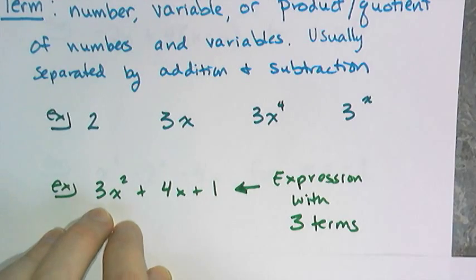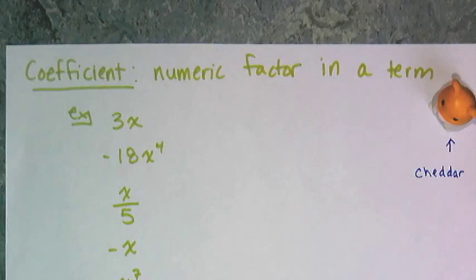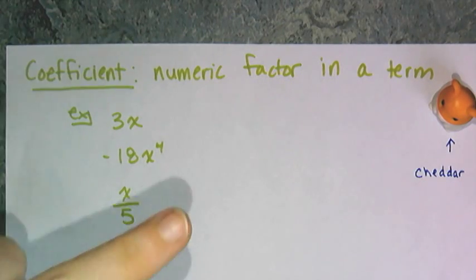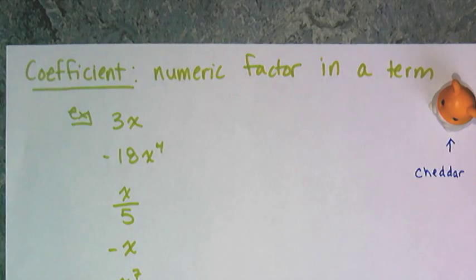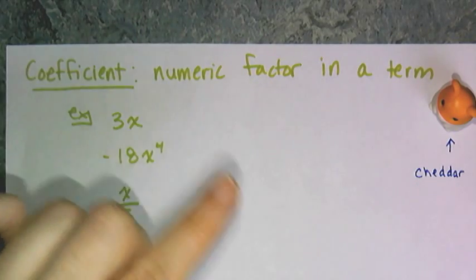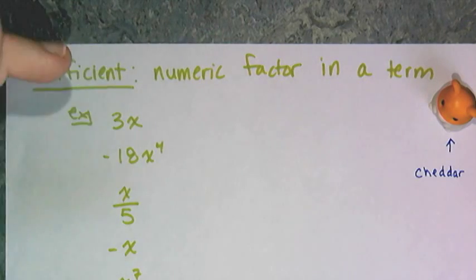So three X squared is a term, four X is a term, and one is a term. Now another super important vocabulary word is coefficient. It is the numeric factor in a term, not an exponent. It's the number multiplied by the variables in the term.